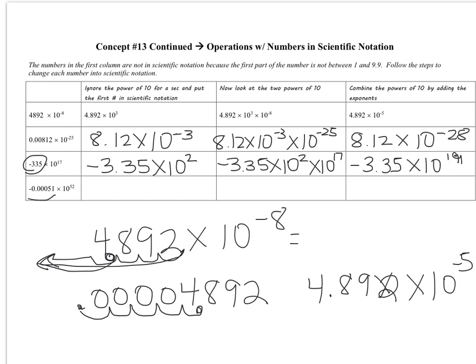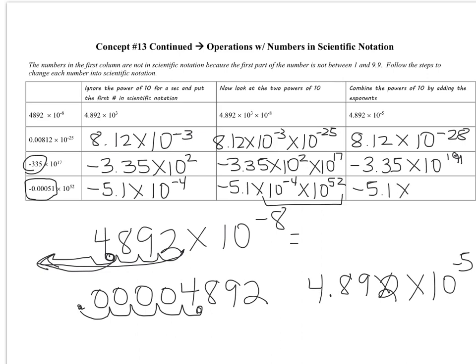For the next one, I need to put the decimal point between the 5 and the 1, so that becomes negative 5.1. Moving the decimal point 4 places to the right means it's times 10 to the negative 4th, because it's a small number. Then multiply negative 5.1 times 10 to the negative 4th by 10 to the 52nd. Adding the exponents: negative 4 plus 52 is 48, giving negative 5.1 times 10 to the 48th.